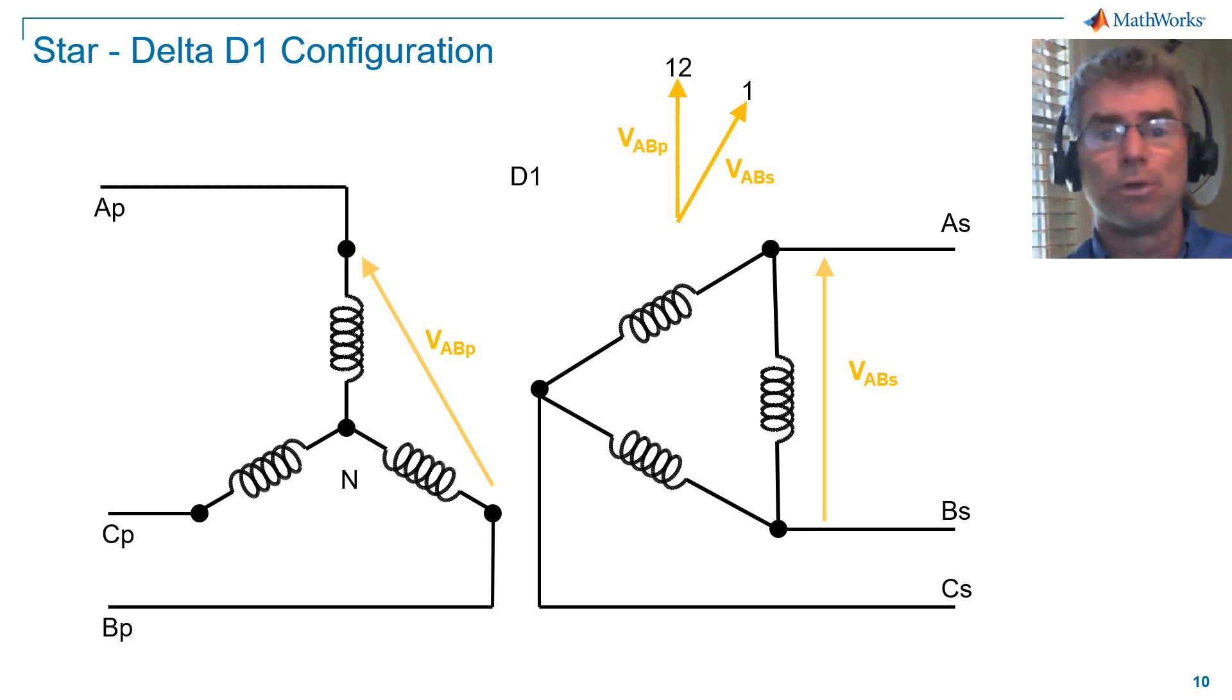With the orientation shown, the system frequency rotates anti-clockwise. And so with D1, secondary line voltage lags primary line voltage by 30 degrees. I'll make one more observation here. Line voltage VAB on the secondary is in phase with phase voltage VAN on the primary. To understand this better, let's revisit the diagram of the three-limb core.